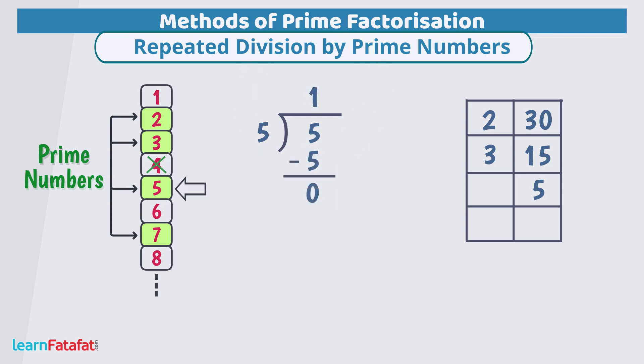So, write divisor 5 here and quotient 1 here. Quotient is 1 so we will stop here. These are the prime factors of this number.